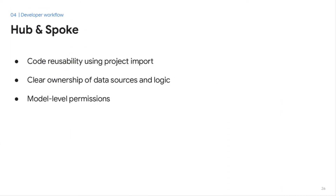To summarize, the Hub & Spoke project architecture allows our team to reuse code efficiently. We're able to empower other users to collaborate on our models, view files, and projects through our ambassador program. We're also able to specify the appropriate permissions for each project so that users only see information that is relevant to them. I hope you found that helpful. If you have any questions or would like to further discuss the Hub & Spoke project architecture, you can find me on LinkedIn as Paola Renteria. Thank you for joining me today.